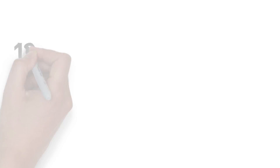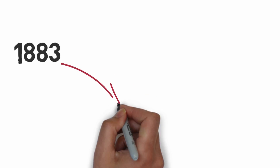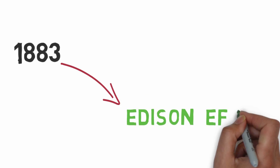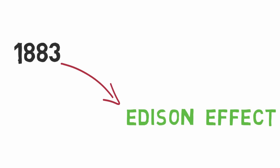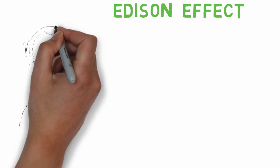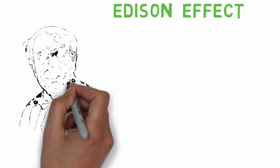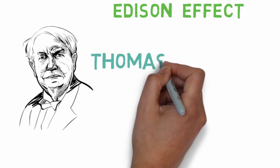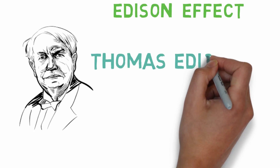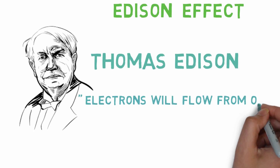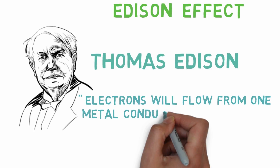The Edison effect was a phenomenon observed by Thomas Edison in 1875 while he was improving his incandescent lamp. He improved it later in 1883, stating that electrons will flow from one metal conductor to another through vacuum.